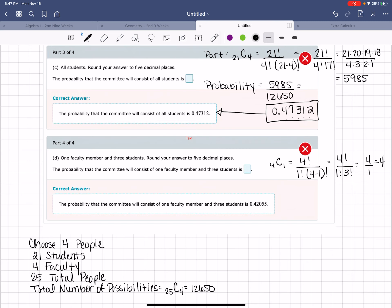Now I need to have one faculty member and 3 students. So I have 21 students. I'm going to choose 3. So that's 21 factorial over 3 factorial times 21 minus 3 factorial.